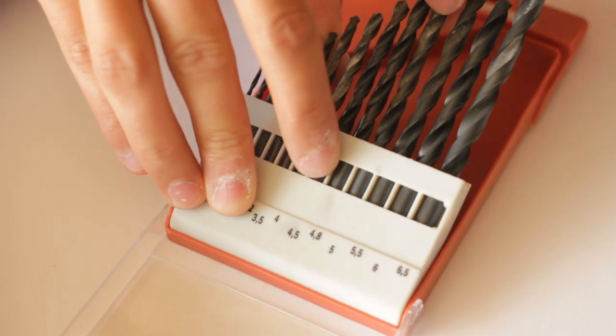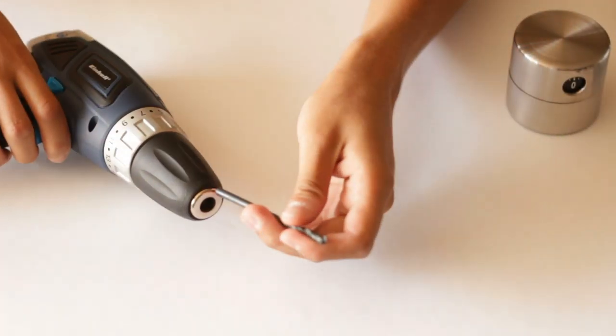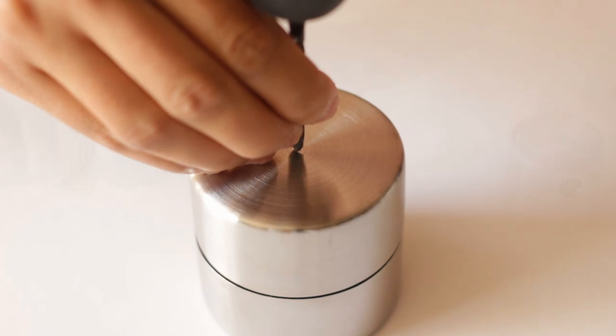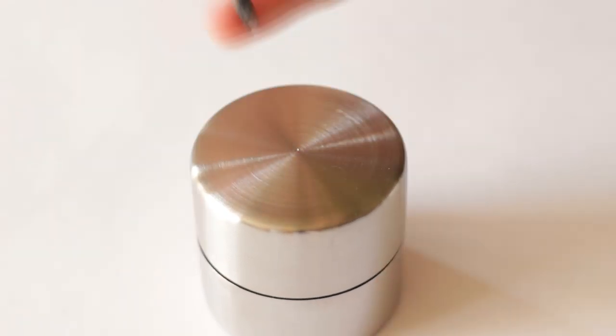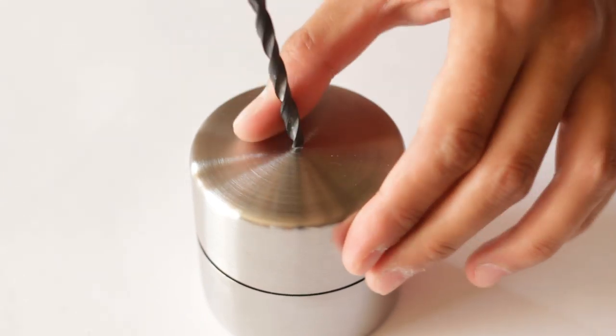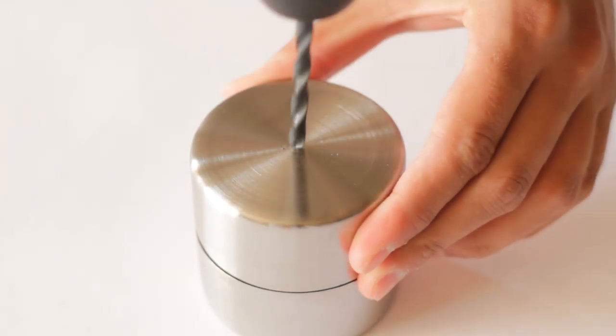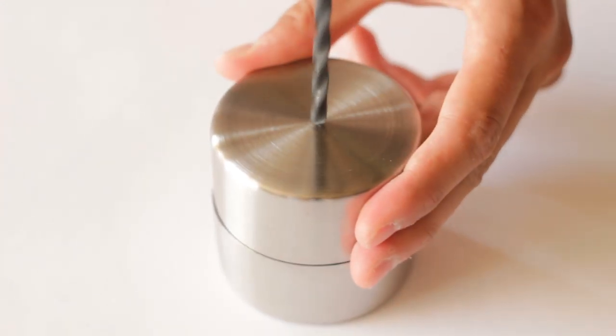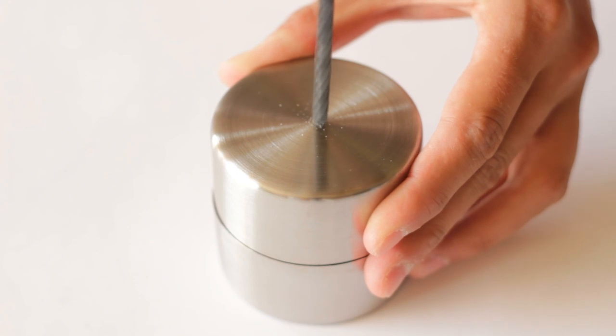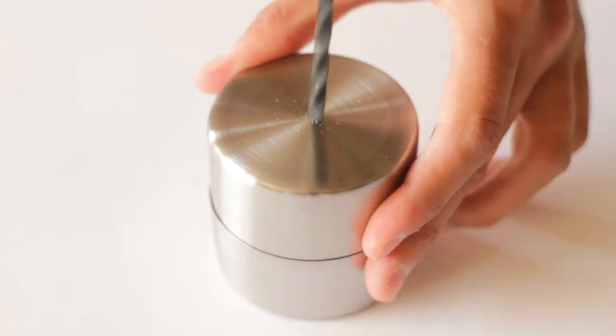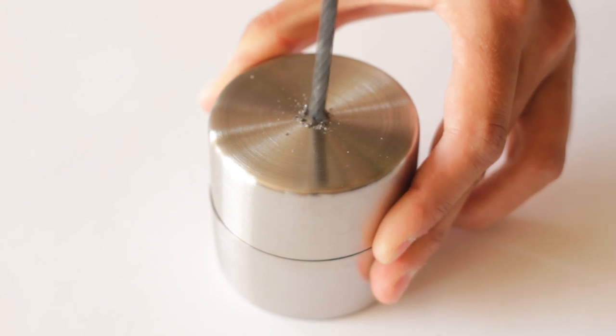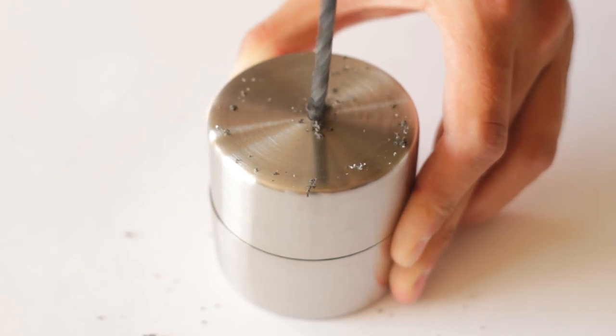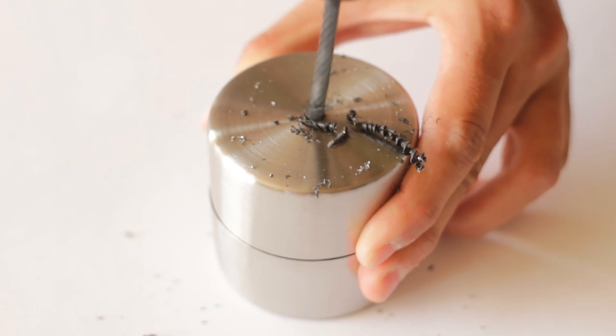We need to drill two holes in the center of the timer. One on top and one on the bottom part. That is not a problem since it has sort of a brushed metal surface and it is really easy to see where the exact center is.